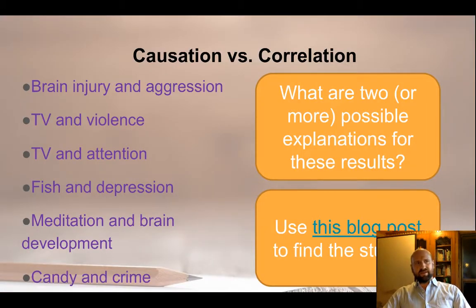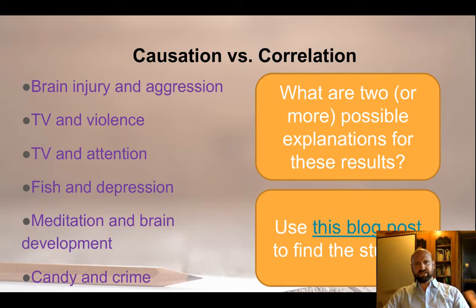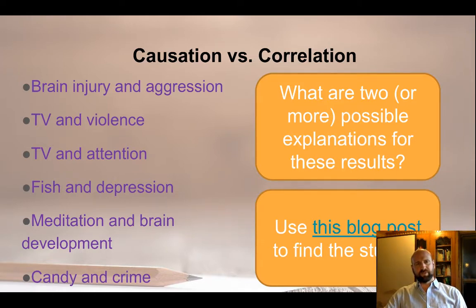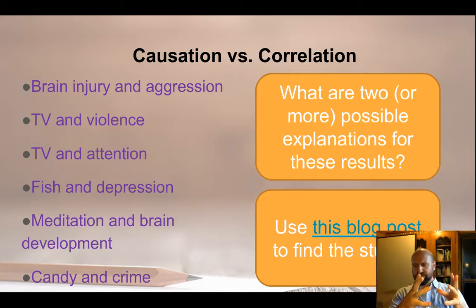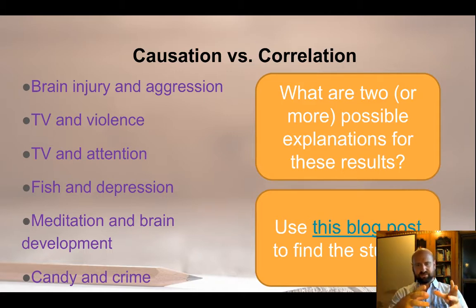I think this is one of my best activities for critical thinking, and it's worth revisiting throughout the course. There's a list of correlations that can be found in the blog post. Students read them and have to come up with two possible explanations. For example, looking at brain injury and aggression: the correlation is that more damage to the prefrontal cortex leads to higher acts of aggression. This is a study we look at in the criminology unit, and students have to come up with two possible explanations.